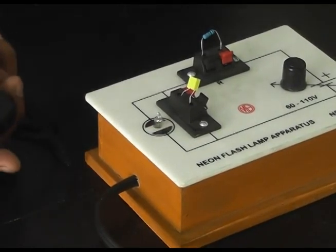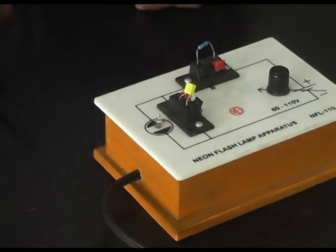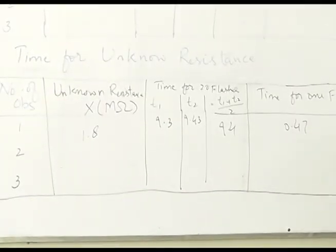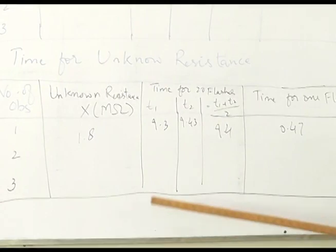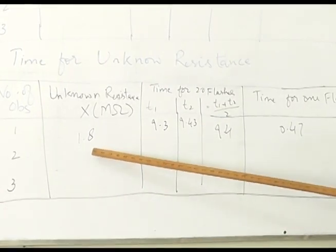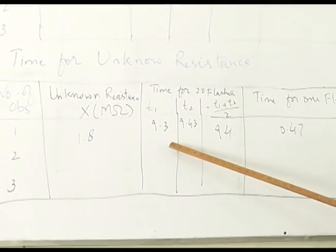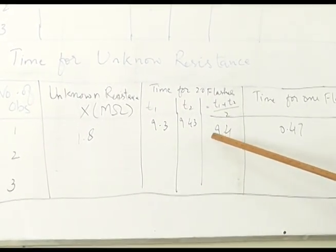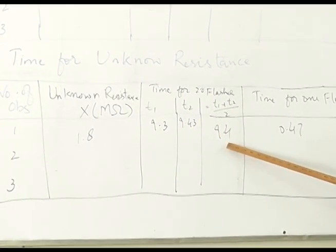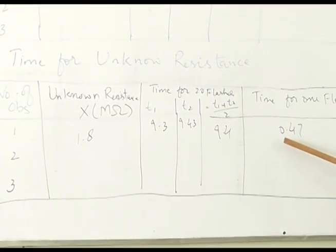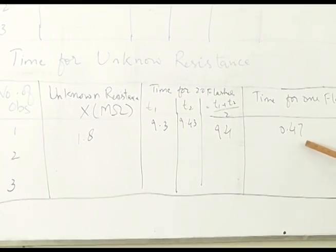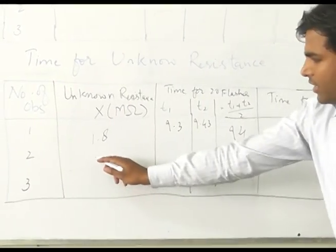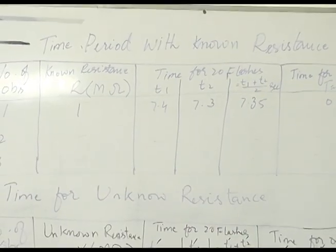I will put this time in the given table. What we have observed: unknown resistance is 1.8 mega ohm. Time for 20 flashes: first reading 9.3 seconds, second reading 9.43 seconds. The average is 9.4 seconds. Time for one flash is equal to 0.47 seconds. Similarly, we will take two more readings.